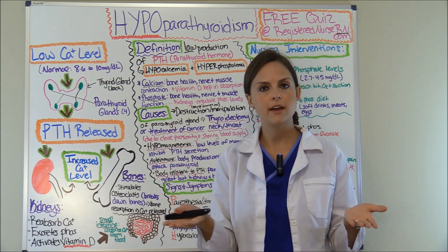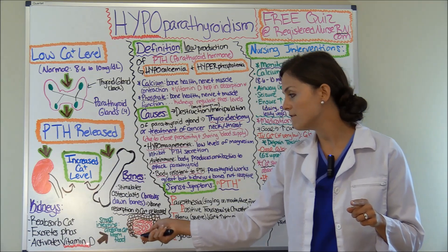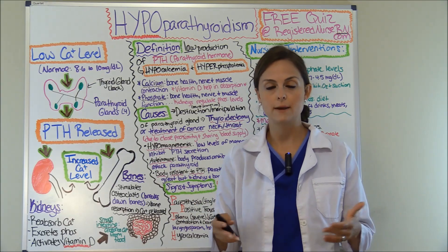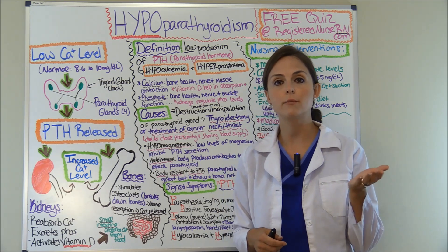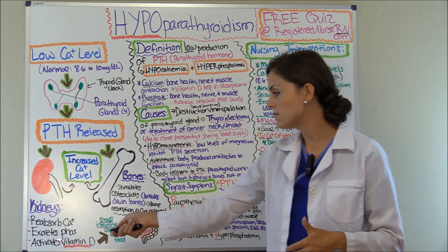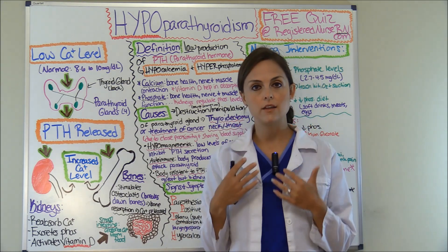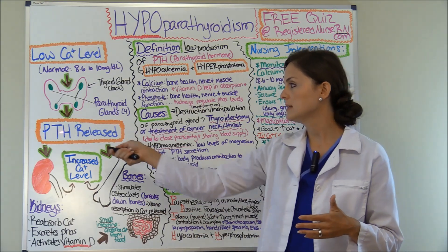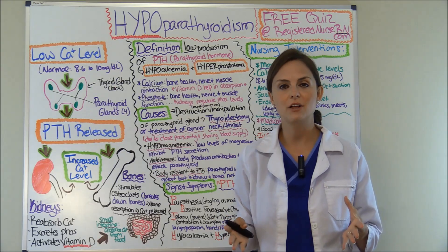PTH also plays a role in excreting phosphate, so the kidneys help keep your phosphate levels regular. PTH also causes the kidneys to activate vitamin D. Vitamin D plays a huge role in absorbing calcium — that's why calcium supplements are often prescribed with vitamin D. This activated vitamin D then causes the small intestines to reabsorb the calcium you've taken in through your food, again increasing calcium levels.